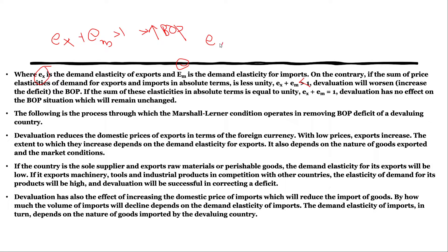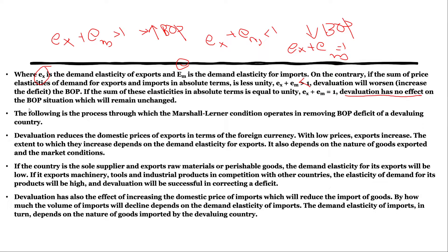If elasticity of demand for exports plus elasticity of demand for imports is less than 1, devaluation will worsen the BOP condition. If elasticity of demand for exports plus elasticity of demand for imports equals 1, devaluation has no effect on the BOP situation, which remains unchanged. So to summarize: greater than 1 improves, less than 1 worsens, and equal to 1 means no effect.